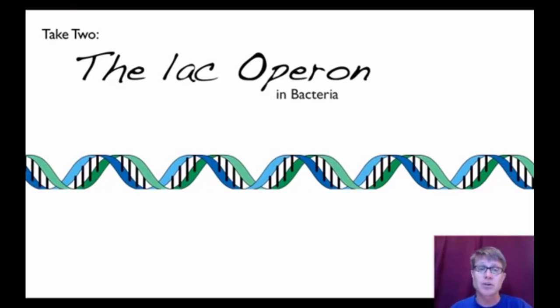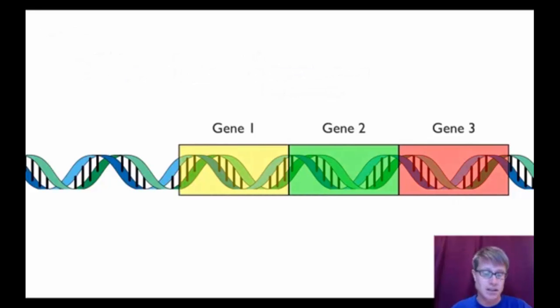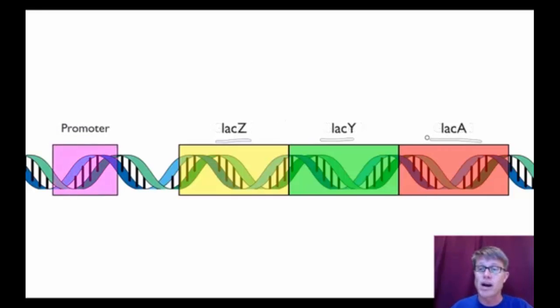Let's talk about how this works in the lac operon in bacteria because this is the first one that we really started to understand. The way they tweak what I just said is that the neat thing about bacteria is instead of just having one gene they'll have a number of genes. So they'll have three genes. All the genes required to deal with lactose will be put right next to each other. So we've named those the lac Z, Y, and A gene. But they each make a protein and they each help break down lactose.